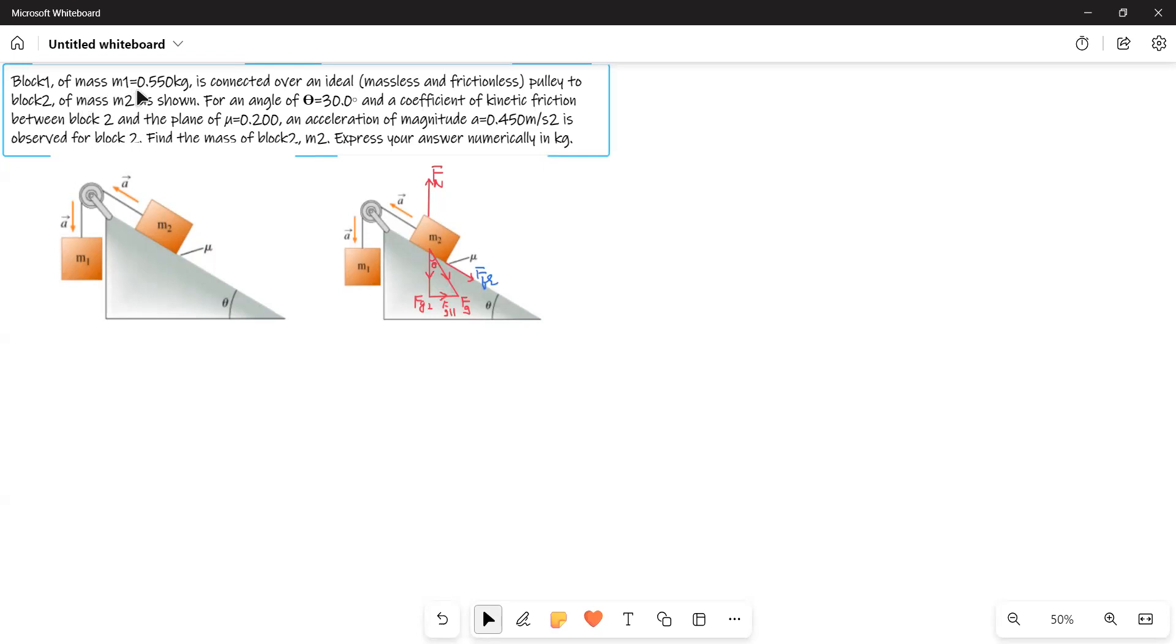Block 1 of mass M1, 0.550 kg, is connected over an ideal massless and frictionless pulley to block 2 of mass M2 as shown. For an angle of theta equal to 30 degrees and a coefficient of kinetic friction between block 2 and the plane of 0.2, an acceleration of magnitude a equal to 0.45 meters per second squared is observed for block 2.